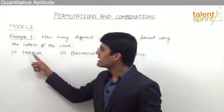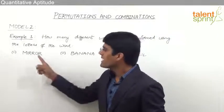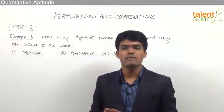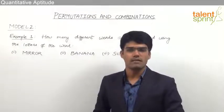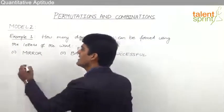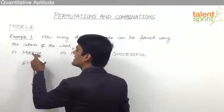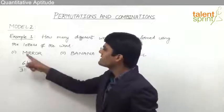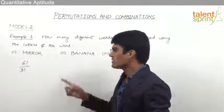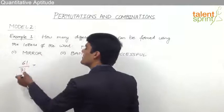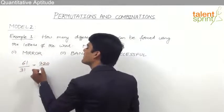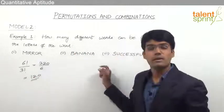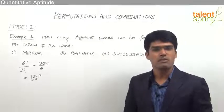Here, the letter R appears thrice, whereas the remaining letters M, I, and O are unique. We know that whenever there is a repetition, we have to take that number of objects' factorial in the denominator. So the answer should be six factorial — because total there are six letters — divided by three factorial, because the letter R appears thrice. Since M, I, and O are unique, we need not worry about them. So the answer is six factorial by three factorial, which is 720 divided by 6, equal to 120. So 120 different words can be formed using the letters of the word mirror.